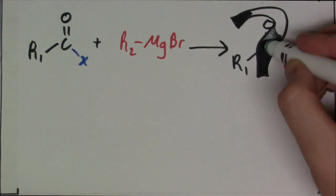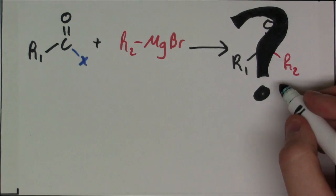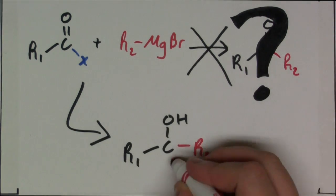But no matter how well you control the reaction conditions, you never end up with a ketone. You always end up with a tertiary alcohol.